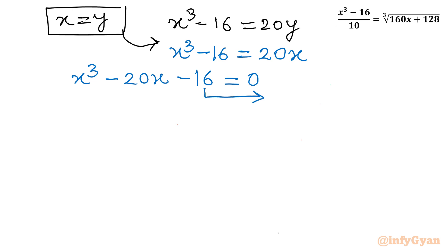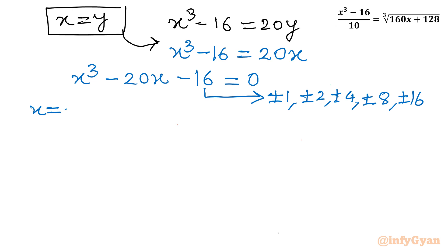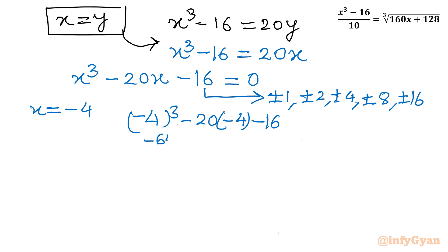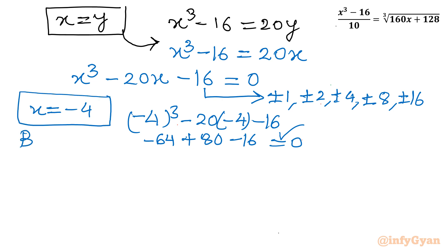Let us find the roots using the rational root theorem. The eligible factors of 16 are ±1, ±2, ±4, ±8, ±16. Let us try x = -4: (-4)³ - 20(-4) - 16 = -64 + 80 - 16 = 0. Yes, it equals zero, so x = -4 is a root and our base solution.